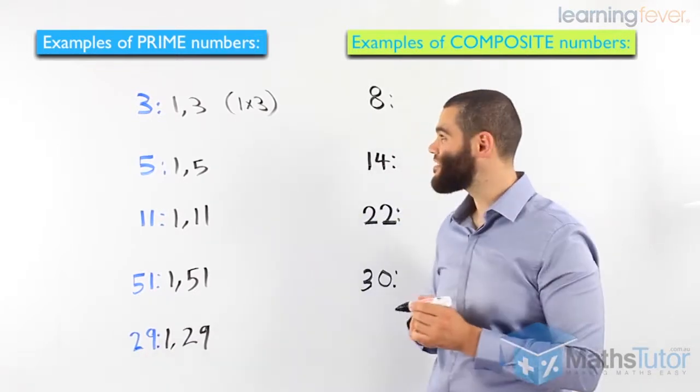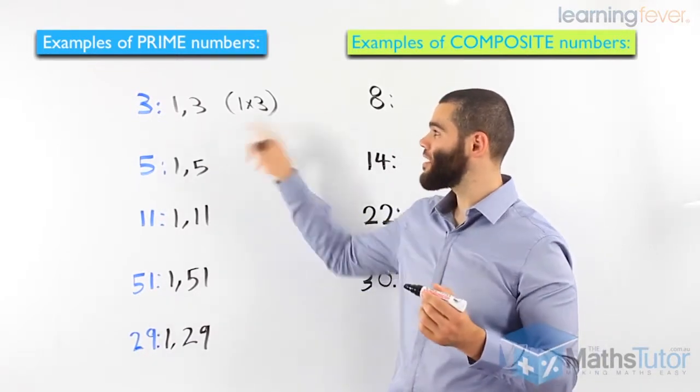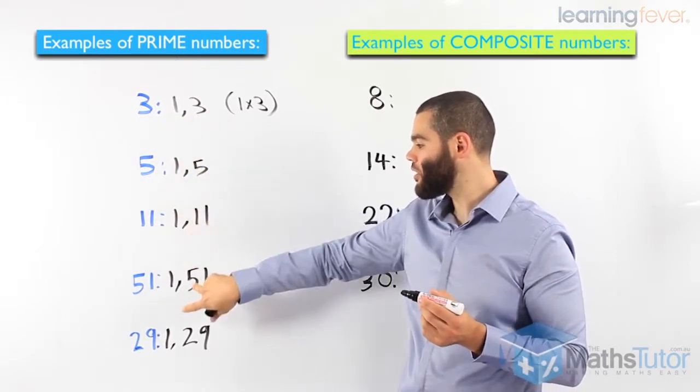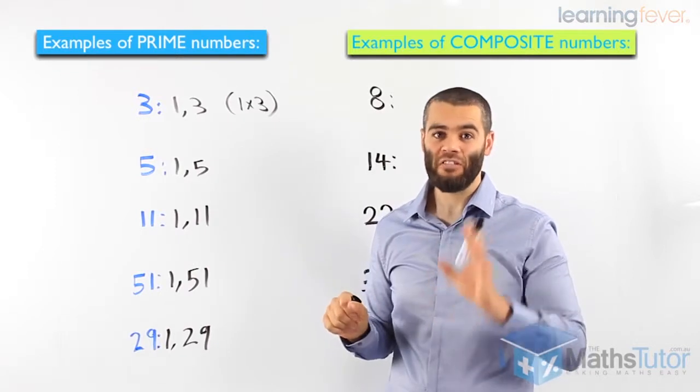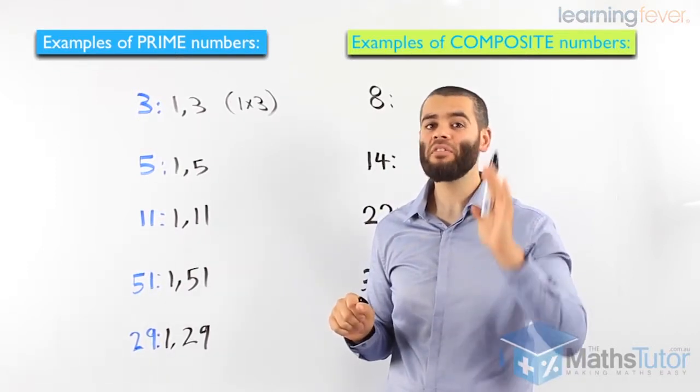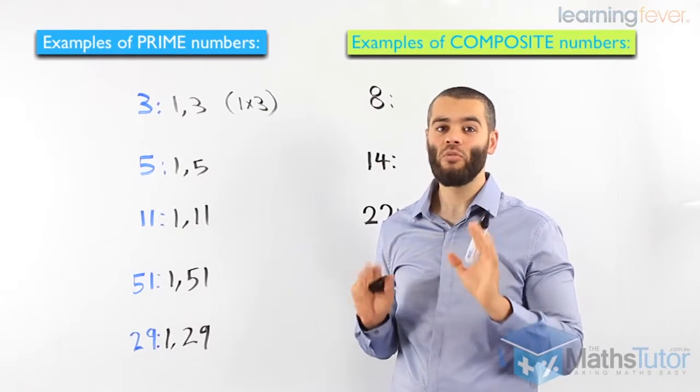So as you can see, prime numbers are made up of 2 factors. 2 factors. No more than that. So whenever you think of prime numbers, think of only 2 factors.